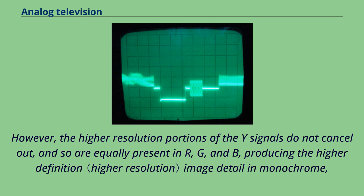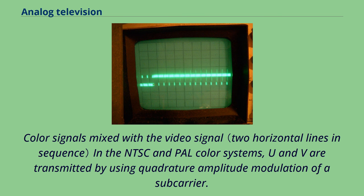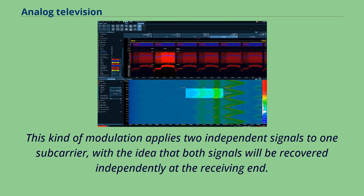In the NTSC and PAL color systems, U and V are transmitted by using quadrature amplitude modulation of a subcarrier. This kind of modulation applies two independent signals to one subcarrier, with the idea that both signals will be recovered independently at the receiving end. Before transmission, the subcarrier itself is removed from the active portion of the video, and moved, in the form of a burst, to the horizontal blanking portion.